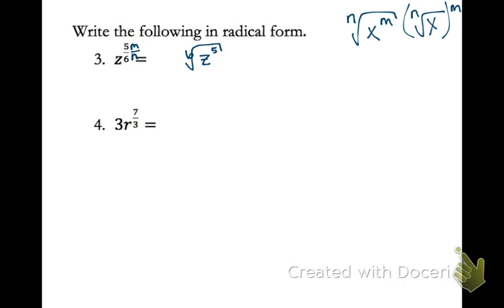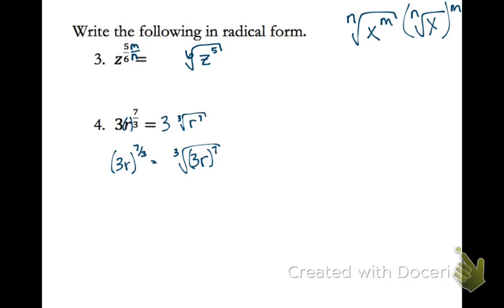For number 4, notice we have 3 and then r to the 7 thirds. This 7 thirds is only going to the r, so we're not going to put the 3 in the radical. The 3 just stays out front. So we have our radical: r is on the inside, 3 is our root, and 7 is the exponent. If the problem had parentheses around 3r, then 3r would all be in the radical and all be to the 7th power. So make sure you notice when you have parentheses — that makes a difference.